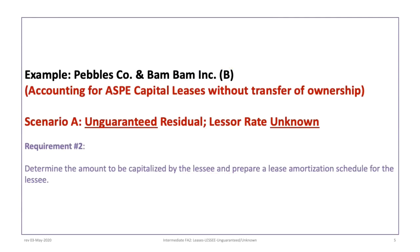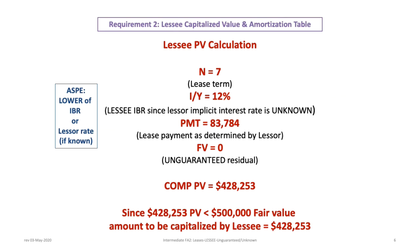For requirement 2, we determine the amount to be capitalized by the lessee and prepare a lease amortization schedule. The capitalized value of a leased asset is simply the present value of the minimum future lease payments. The lease term is 7 years, so N equals 7. Under ASPE, the appropriate interest rate is the lower of the lessee's IBR or the lessor's implicit rate, if known.